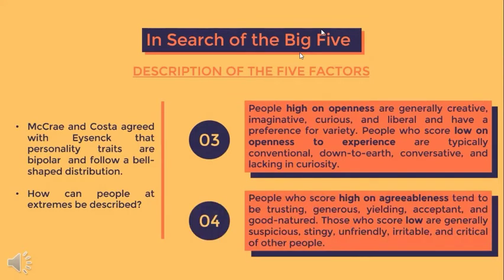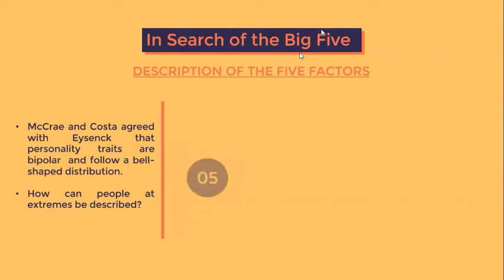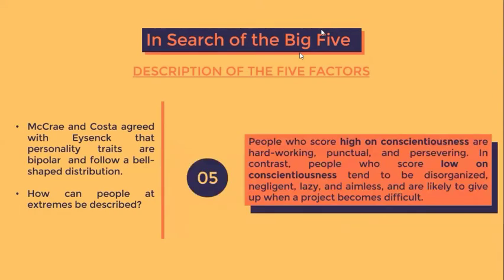Agreeableness refers to how people tend to treat relationships with others, distinguishing soft-hearted people from ruthless ones. People who score high tend to be trusting, generous, yielding, accepting, and good-natured, while those who score low are generally suspicious, stingy, unfriendly, irritable, and critical of others. Lastly, conscientiousness describes a person's ability to regulate impulse control in order to engage in goal-directed behaviors. People who score high are hard-working, punctual, and persevering, while those who score low tend to be disorganized, negligent, lazy, and aimless, likely to give up when a project becomes difficult.